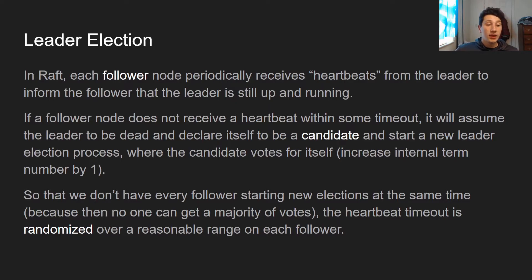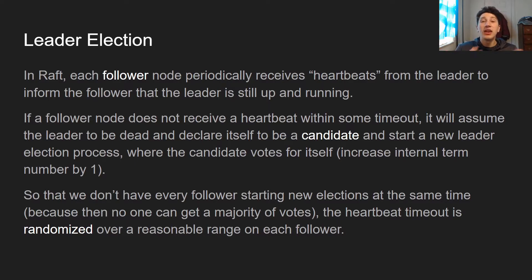Because a candidate needs a majority of votes to become leader, we don't want every single follower starting new elections at the same time — they'd all vote for themselves and no node would be elected. So we randomize the timeouts that each follower has locally to determine when a leader is dead. This means typically one node will go off and say 'I think the leader is dead,' while the others still think the leader is alive but know a vote is going on. The heartbeat timer is randomized uniformly over a distribution — at minimum a few heartbeats long, but long enough that an entire election process can ensue without another node simultaneously declaring itself a candidate.